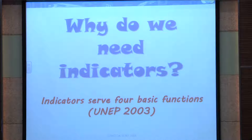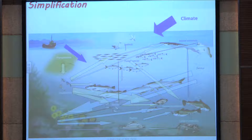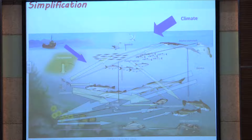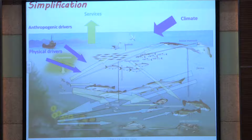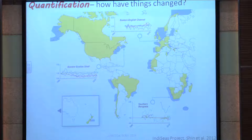Why do we need indicators? According to UNEP, indicators provide four basic functions. First is simplification: the systems we deal with are essentially complex, non-linear systems, and we need simplification in order to communicate messages. Our ecosystems have multiple interactions — both intra- and inter-specific — and are forced by climate and anthropogenic drivers. We need indicators that simplify the system in order for us to understand how things are changing, what the drivers are, the response, and the state. We also want to quantify how things have changed, and looking at indicators over time allows us to track those changes.